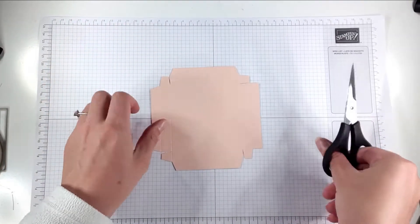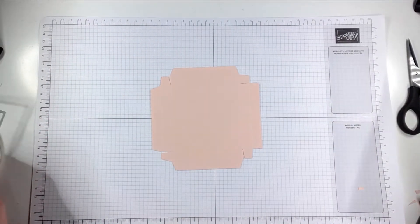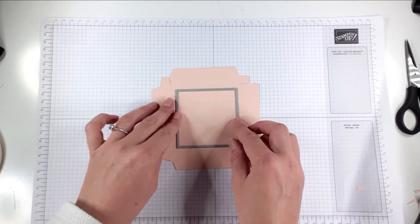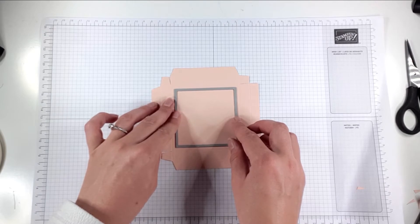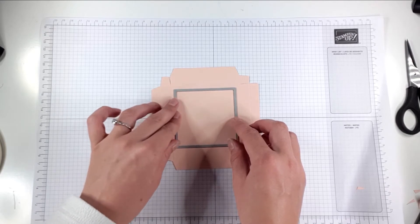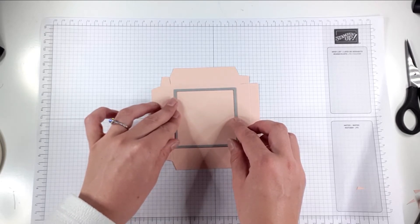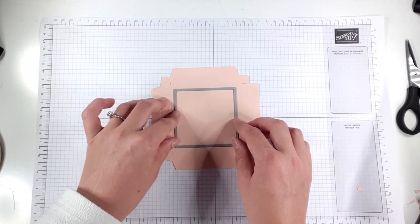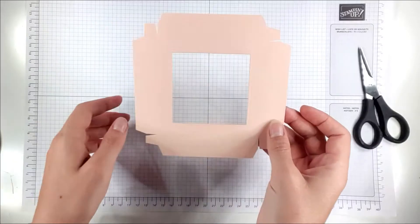To create the window on the top of the box I've just got the largest of the squares from the layering squares dies and I'm just going to place this in the center of the lid. Then I'm just going to go and die cut that.